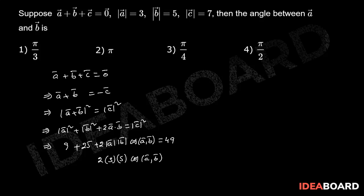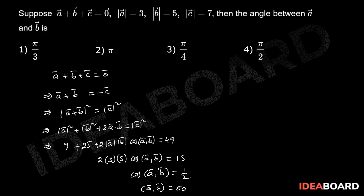So cos of the angle between a⃗ and b⃗ equals 1/2, therefore the angle between a⃗ and b⃗ equals 60 degrees, that is π/3. So the correct answer is the first option.